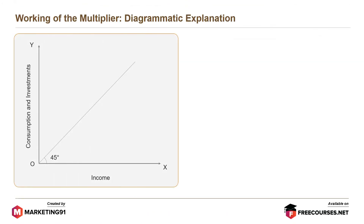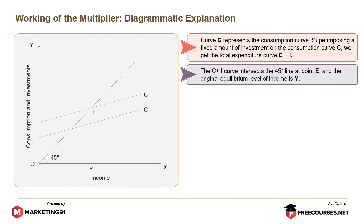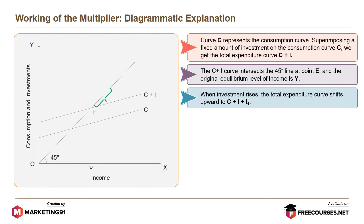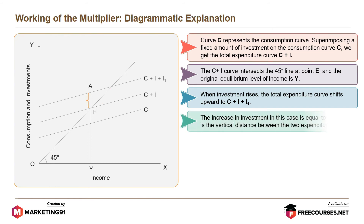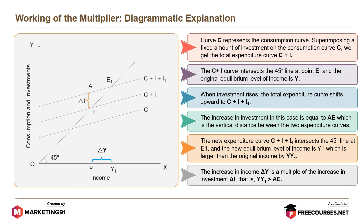In this chart, income is on the x-axis, consumption and investments are on the y-axis, and there is a 45-degree line from origin O. Curve C represents the consumption curve. Superimposing a fixed amount of investment on the consumption curve C, we get the total expenditure curve C plus I. The C plus I curve intersects the 45-degree line at point E, and the original equilibrium level of income is Y. When investment rises, the total expenditure curve shifts upwards to C plus I plus I1. The increase in investment equals AE, which is the vertical distance between the two expenditure curves. The new expenditure curve C plus I plus I1 intersects the 45-degree line at E1, and the new equilibrium level of income is Y1, which is larger than the original income by YY1. The increase in income, delta Y, is a multiple of the increase in investment, delta I, i.e., YY1 is greater than AE.